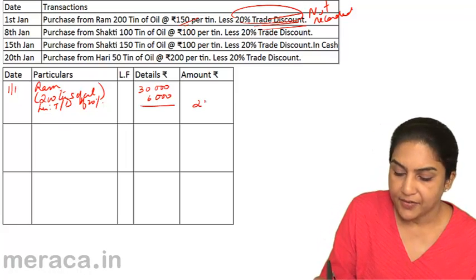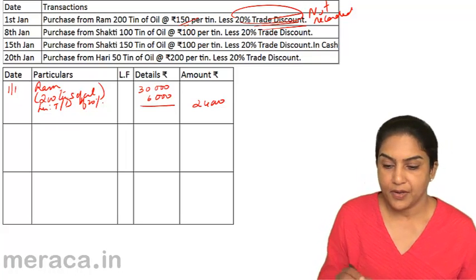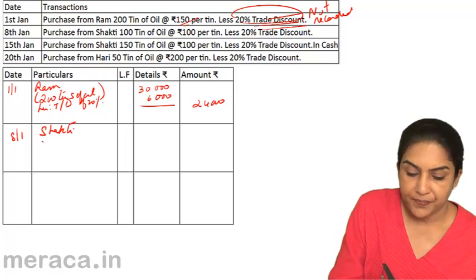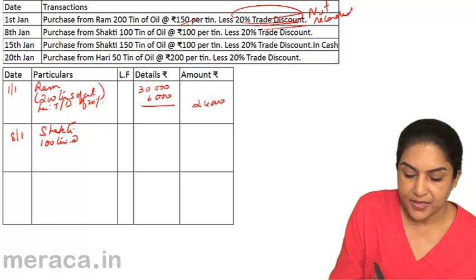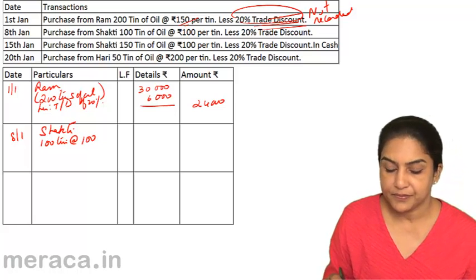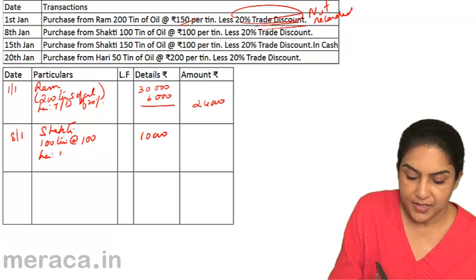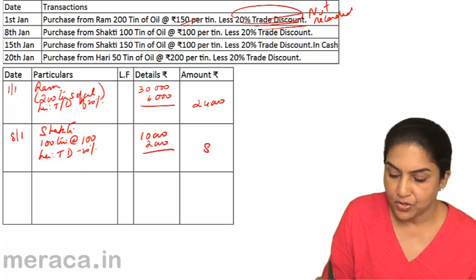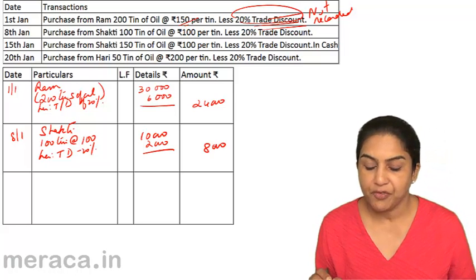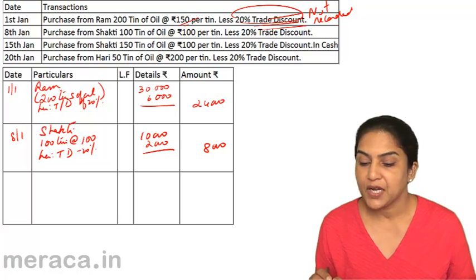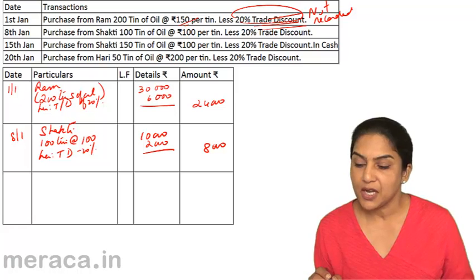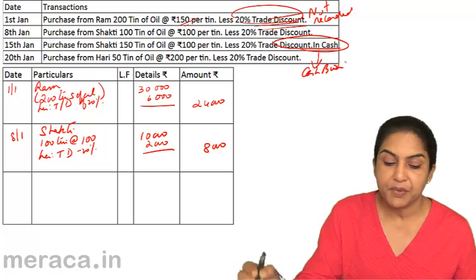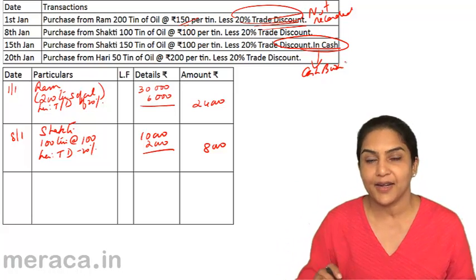There could be other details and then we get 24,000. On 8th January, we purchase again — we write the name of the person, Shakti. The details are 100 tins at the rate of 100 per tin, that is 10,000 less trade discount of 20%, giving us 8,000. Note: a purchase made in cash will go to the cash book; it will not find a place in the purchase day book, because in the purchase day book we record only credit purchases of goods.